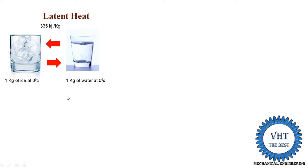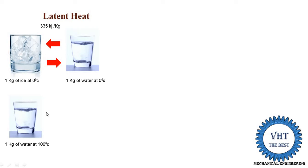The second example is for the liquid phase to the steam phase. In this example, we consider water to steam — that means liquid phase to gas phase — which is also known as latent heat. We have 1 kg of water at 100 degrees centigrade in a glass, and we supply a certain quantity of heat. The water starts converting into vapor but its temperature does not change. The water is converted into 1 kg of steam at 100 degrees centigrade. This is called the latent heat of vaporization.